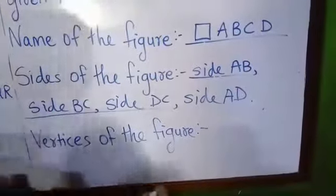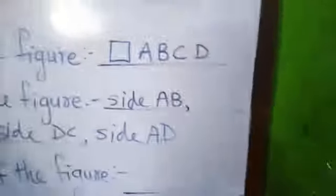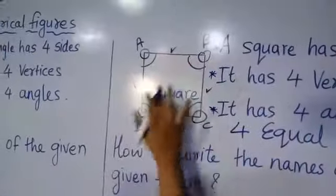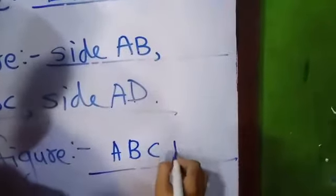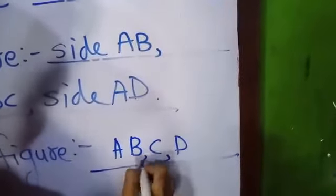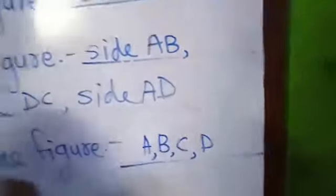The vertices of the square are A, B, C, D — or you can write A, B, D, C. Either is acceptable. These are the vertices of the square.